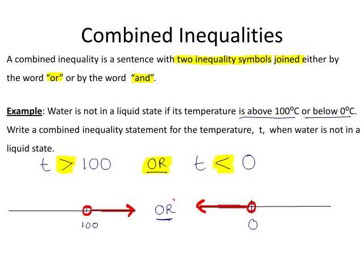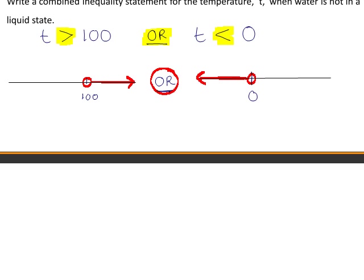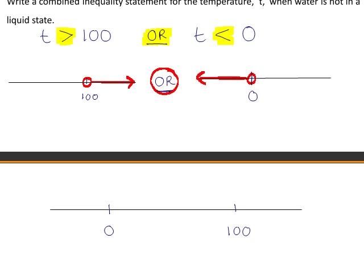Because the word OR is used to join these two inequalities, we want the union of our two solution sets. Representing this on the number line, we want temperatures less than 0 or temperatures greater than 100.